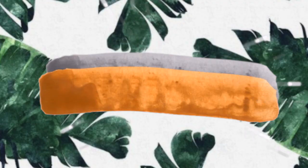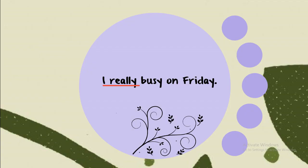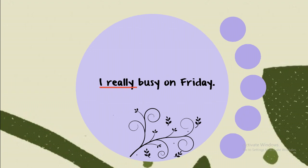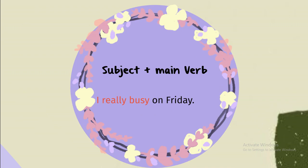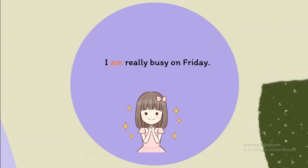Error 7: Verb. Look at this sentence: 'I really busy on Friday.' This is not a complete sentence. Note that every sentence must contain two components: a subject and a main verb. If either is missing, the sentence is not complete. In this sentence, 'really' is an adverb and 'busy' is an adjective, so it still needs a main verb. The correct sentence is: 'I am really busy on Friday.'